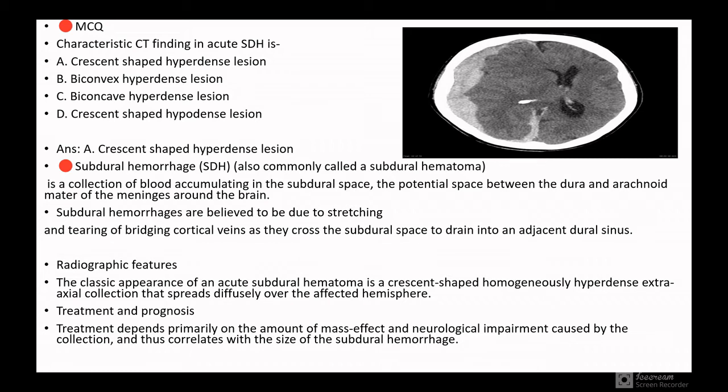Coming to pointer four, an MCQ. You can see the CT scan on your screen. The CT finding is: acute subdural hematoma is crescent shape hyperdense lesion, biconvex hyperdense lesion, biconcave hyperdense lesion, or eccentric shape hyperdense lesion. The answer will be crescent shape hyperdense lesion.